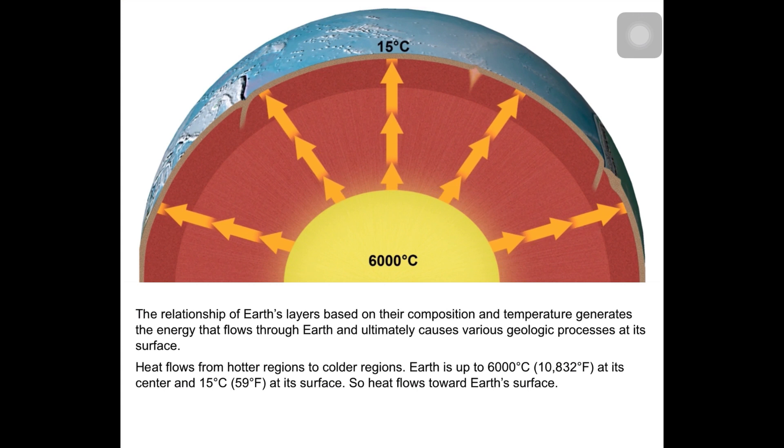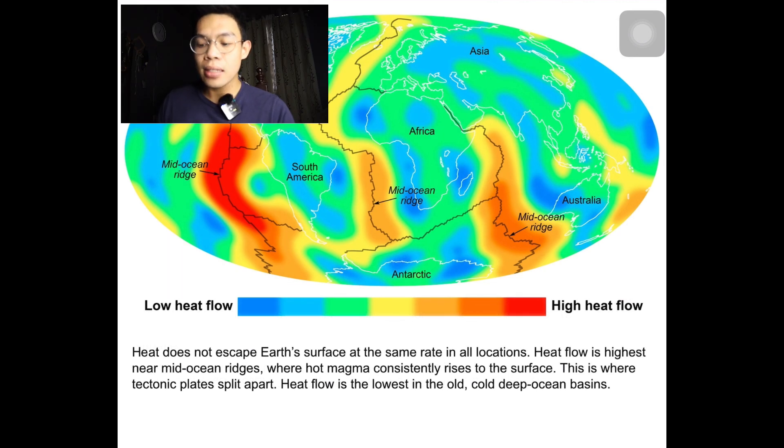The relationship of Earth's layers based on their composition and temperature generates the energy that flows through the Earth and ultimately causes various geological processes at its surface. Heat flows from hotter regions to colder regions. Earth is up to 6,000 degrees Celsius (10,832 degrees Fahrenheit) at its center and 15 degrees Celsius (59 degrees Fahrenheit) at its surface, so heat flows toward the Earth's surface. Heat does not escape the Earth's surface at the same rate in all locations. Heat flow is highest near mid-ocean ridges where hot magma consistently rises to the surface, where tectonic plates split apart, and heat flow is lowest in the cold, deep ocean basins.